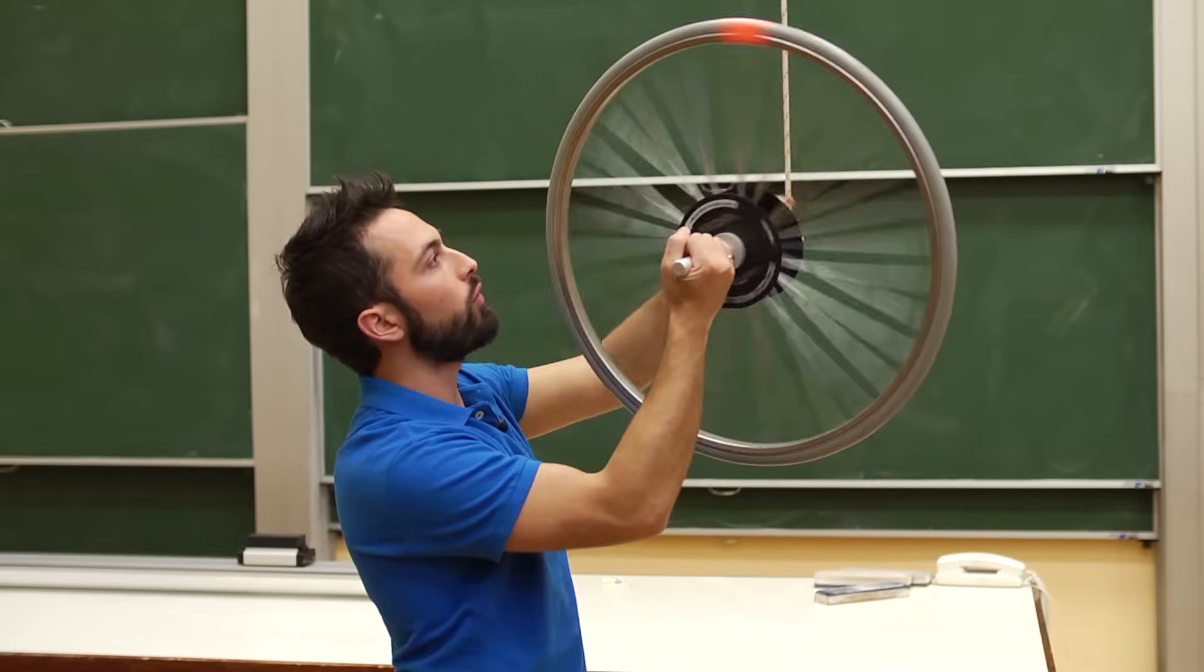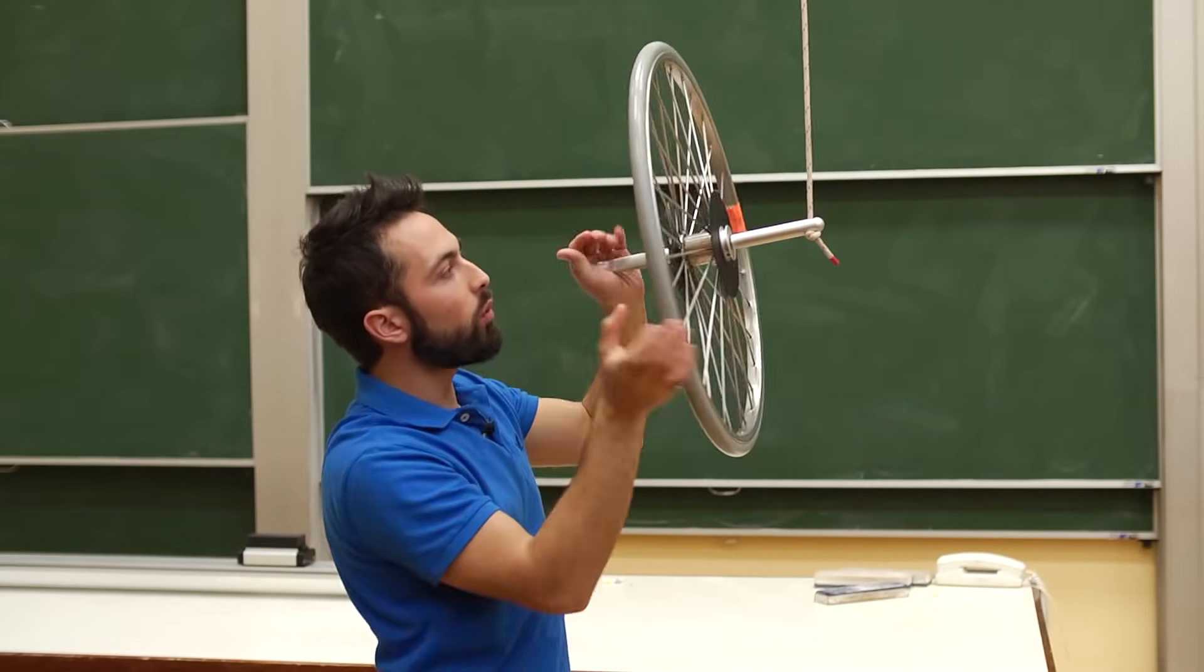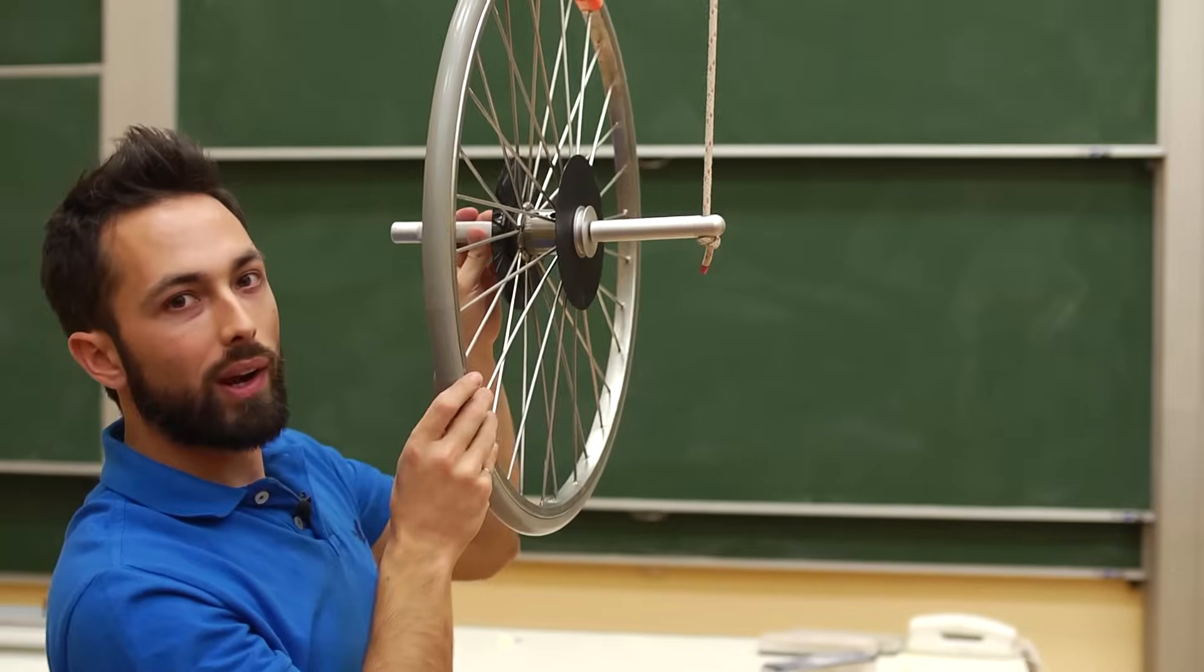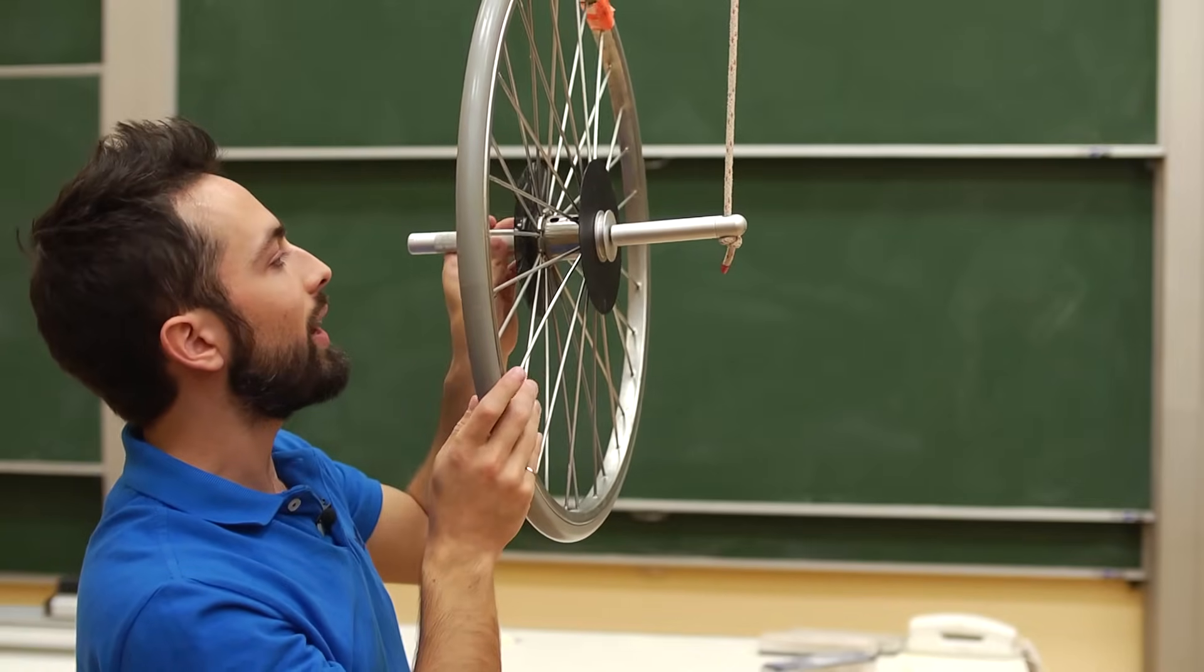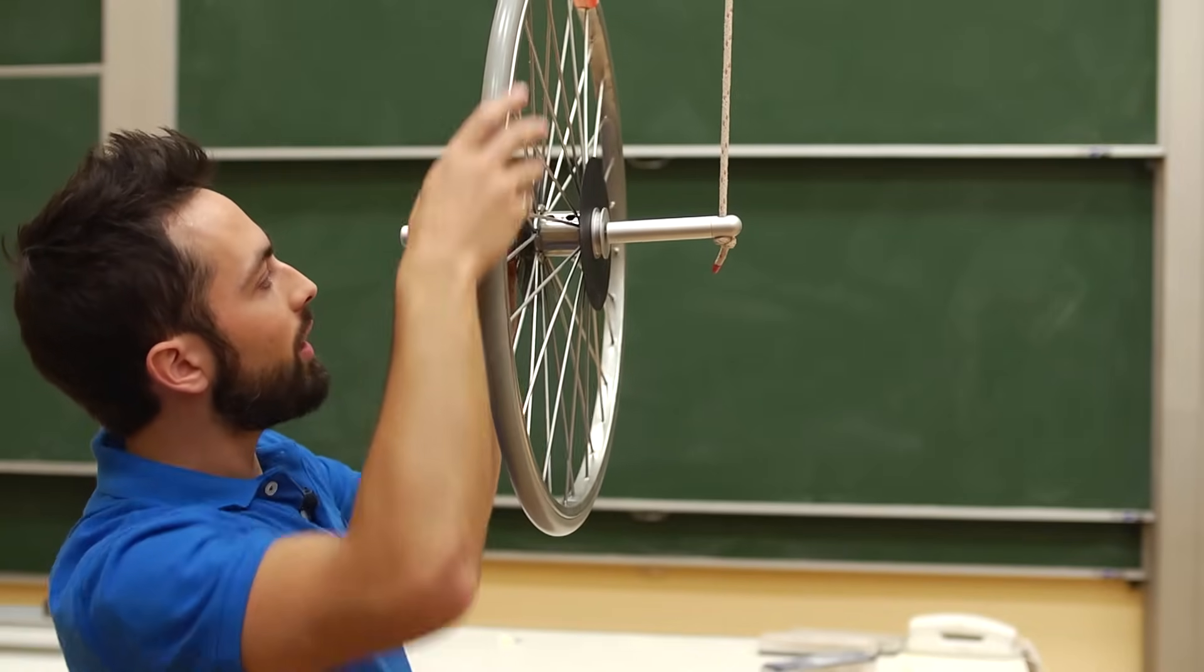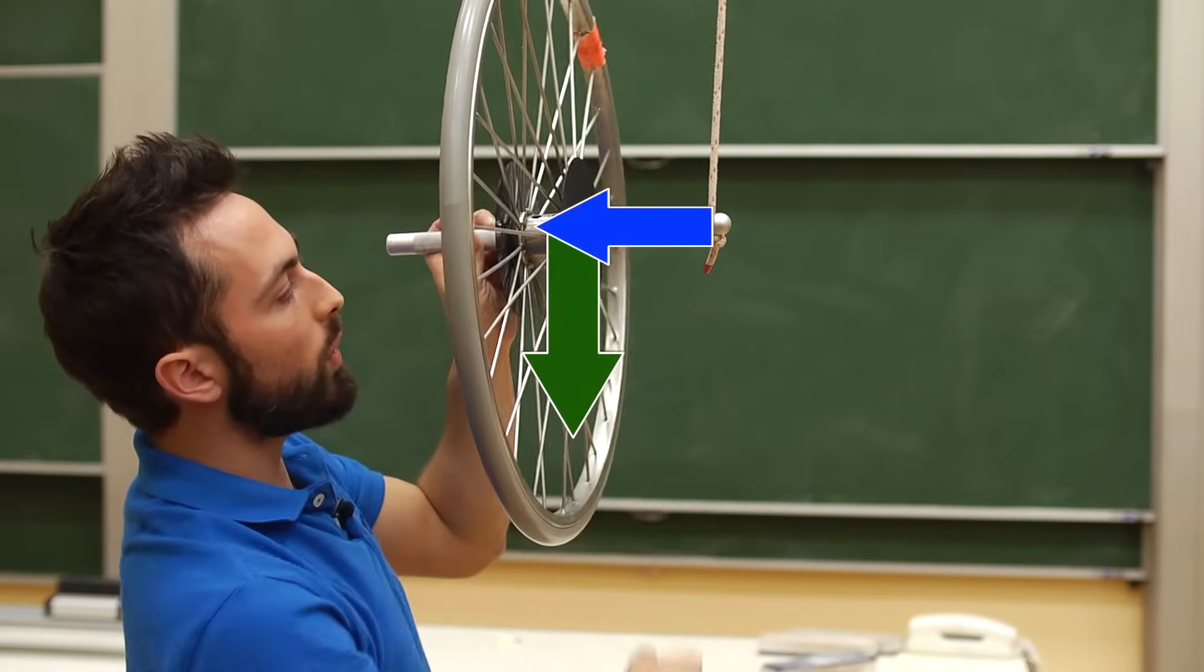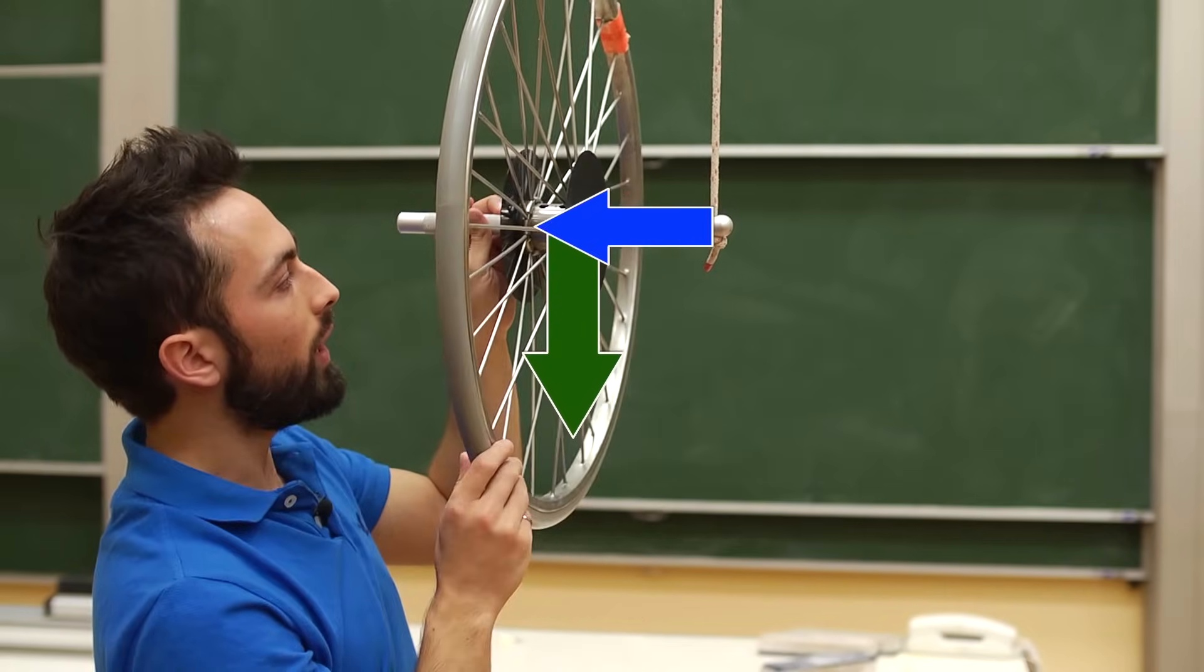Now before I go any further let's have a look at this setup that I've got. I have a wheel here hanging from only one side by this rope. And so right now there's actually a torque on the whole system if I let go, because the weight of this wheel is pulling down and that force is applied at this distance away from its pivoting point there.